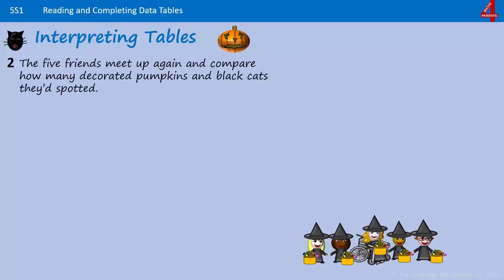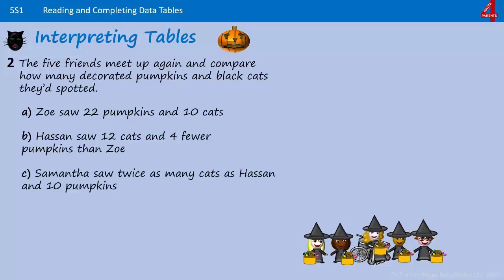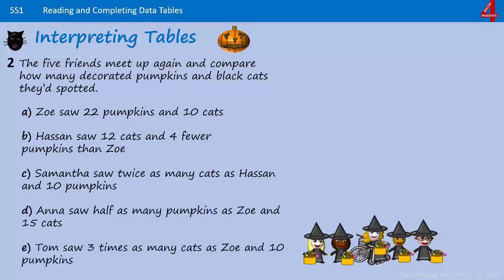The five friends meet up again and compare how many decorated pumpkins and black cats they've spotted. Zoe saw 22 pumpkins and 10 cats. Hassan saw 12 cats and four fewer pumpkins than Zoe. Samantha saw twice as many cats as Hassan and 10 pumpkins. Anna saw half as many pumpkins as Zoe and 15 cats. Tom saw three times as many cats as Zoe and 10 pumpkins.